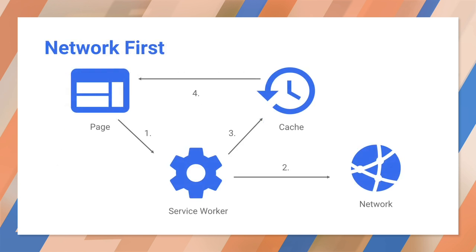The network-first strategy — also known as network falling back to cache — is ideal as a quick fix for resources that update frequently, no matter what the version of your site. For example, articles, avatars, social media timelines, and game leaderboards. This means online users get the most up-to-date content, but offline users get a cached version, which is potentially older. If a network request succeeds, you'll most likely want to update the cache entry. However, this method has flaws: if the user has an intermittent or slow connection, they'll have to wait for the network to fail before they get the content already on their device, which can take an extremely long time and is a frustrating user experience.